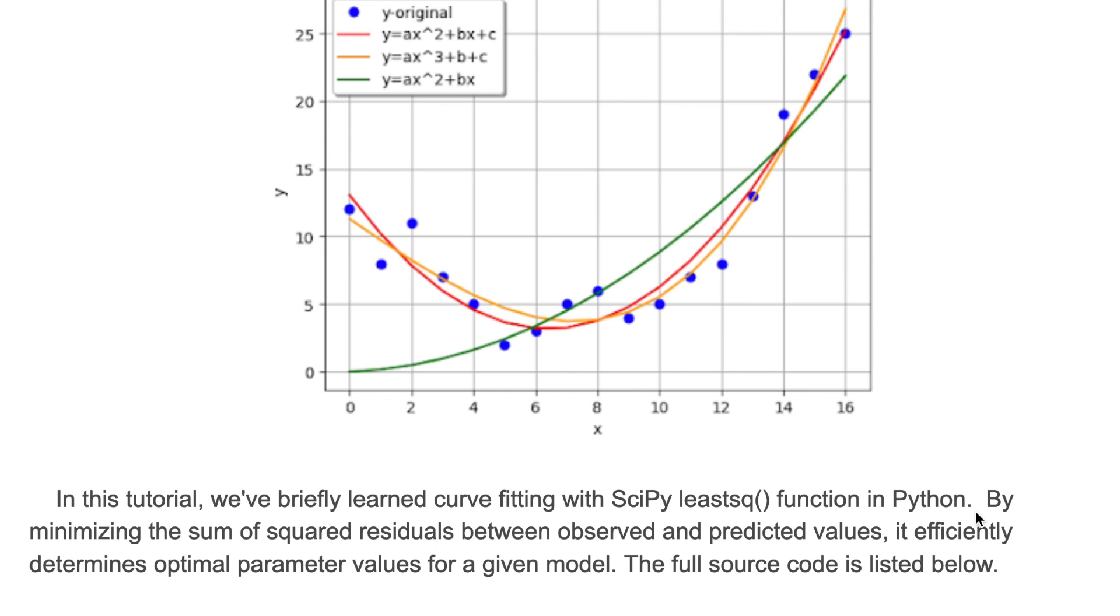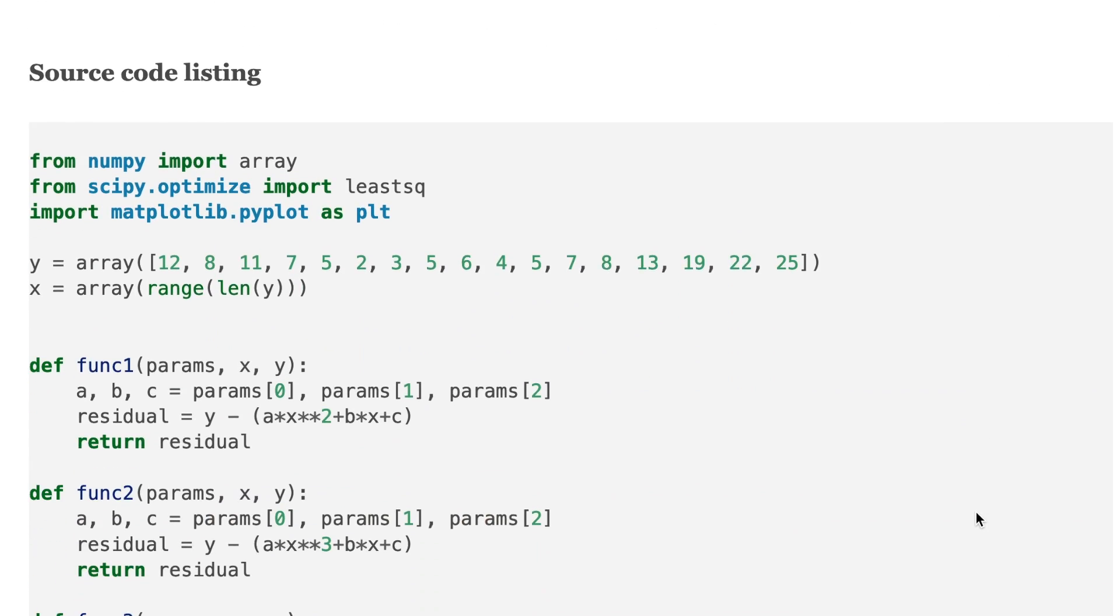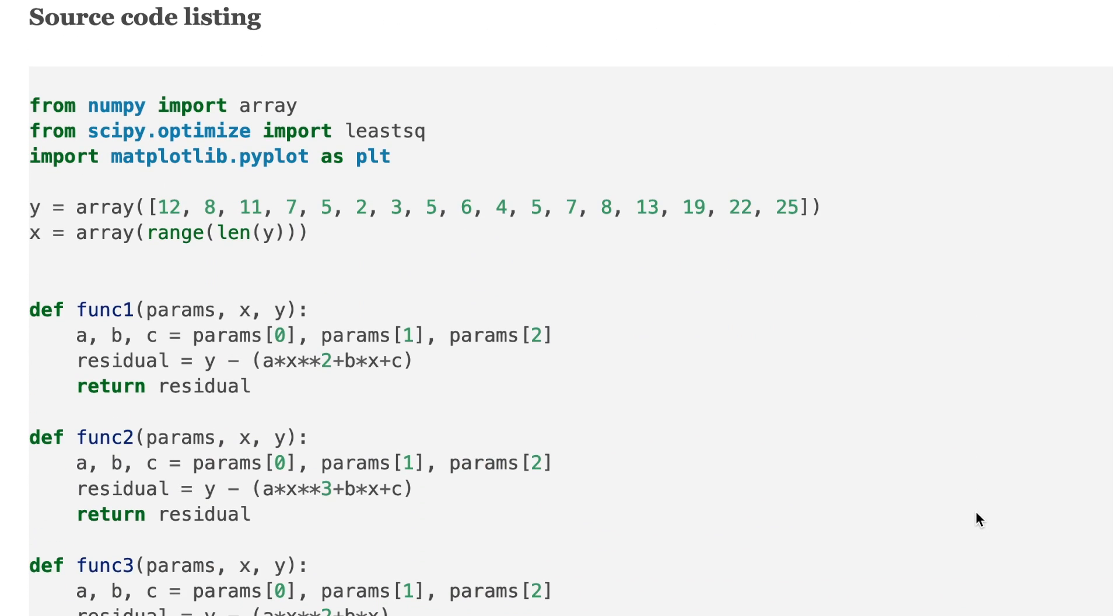In this tutorial, we briefly learned curve fitting with SciPy's leastsq function. By minimizing the sum of squared residuals between observed and predicted values, it efficiently determines optimal parameter values for a given model. Here is the source code. I'll put the link to the source code in the description.